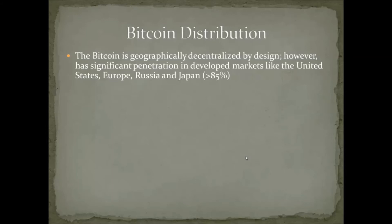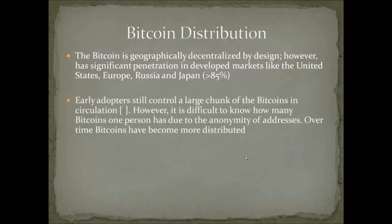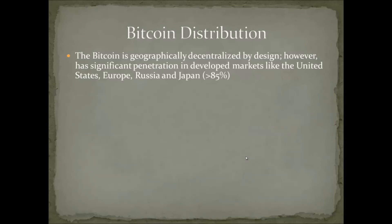That said, Bitcoin has significant penetration in developed markets, particularly in the United States, Europe, Russia, and Japan. Over 85% of all the Bitcoins currently in circulation are contained within these entities. Over time, the hope is that Bitcoin will become more and more decentralized, and more used in countries with weak, unstable currencies — recalling the Zimbabwean financial crisis discussed in lecture one.